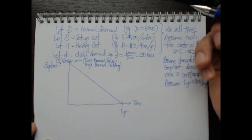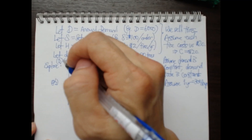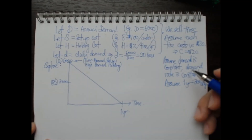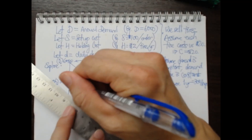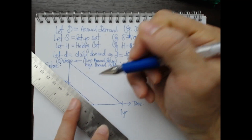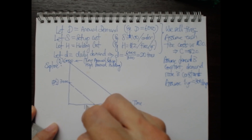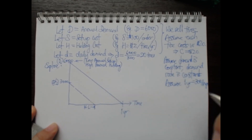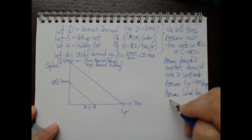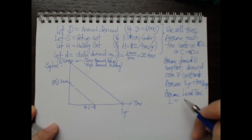Another strategy is to order less each time — for example, buying half the annual amount of tires at a time, which is 3,000 tires per order. We sell through them and eventually run low. If we assume the lead time is L days — suppose L equals 3 days — then L days before we expect to reach zero inventory, we begin to place a new order.